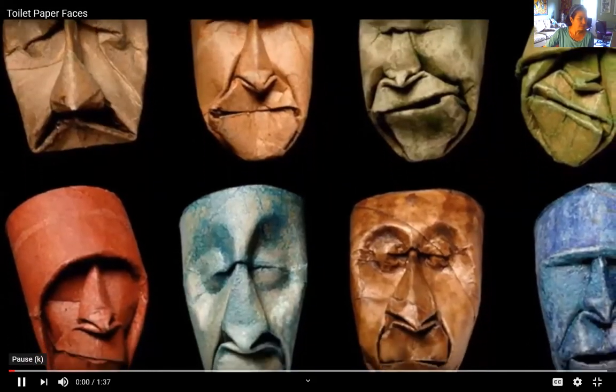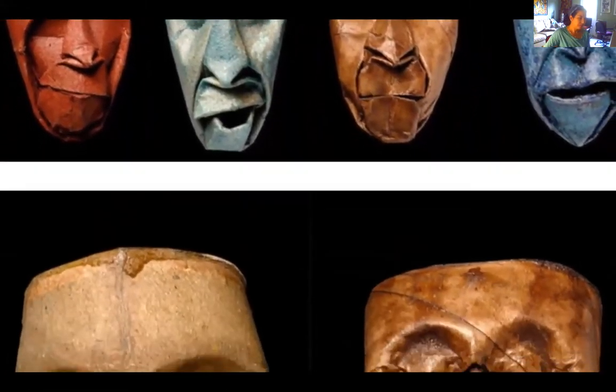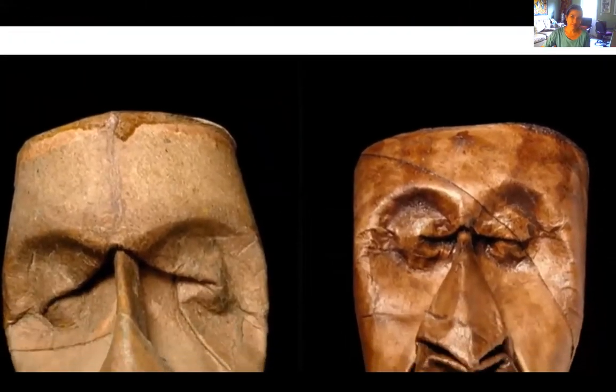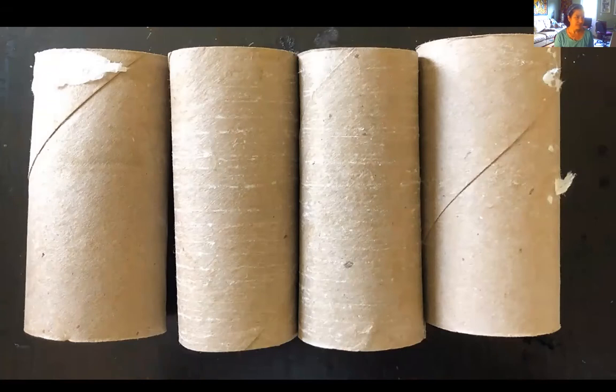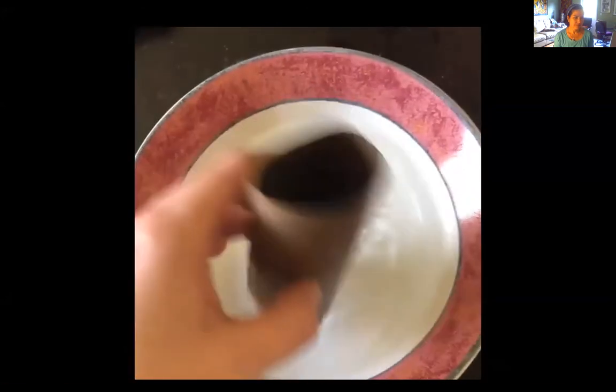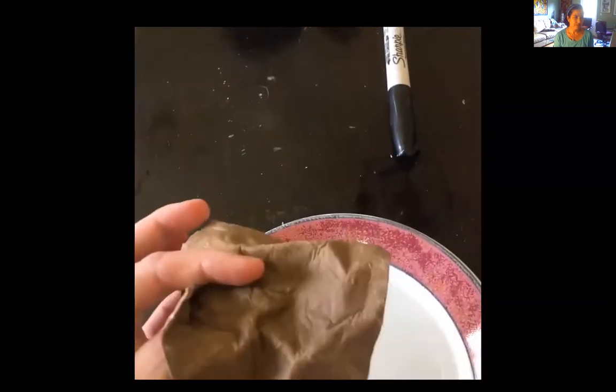Today we will be making Junior Fritz Jaquette toilet paper roll faces. You will start with an empty toilet paper roll. I would get more than just one to start with because you might mess up or break it on your first try. You will then get your toilet paper roll wet. Do not hold it in there for more than 10 seconds, maybe five at the most. If you do, it will break and rip.